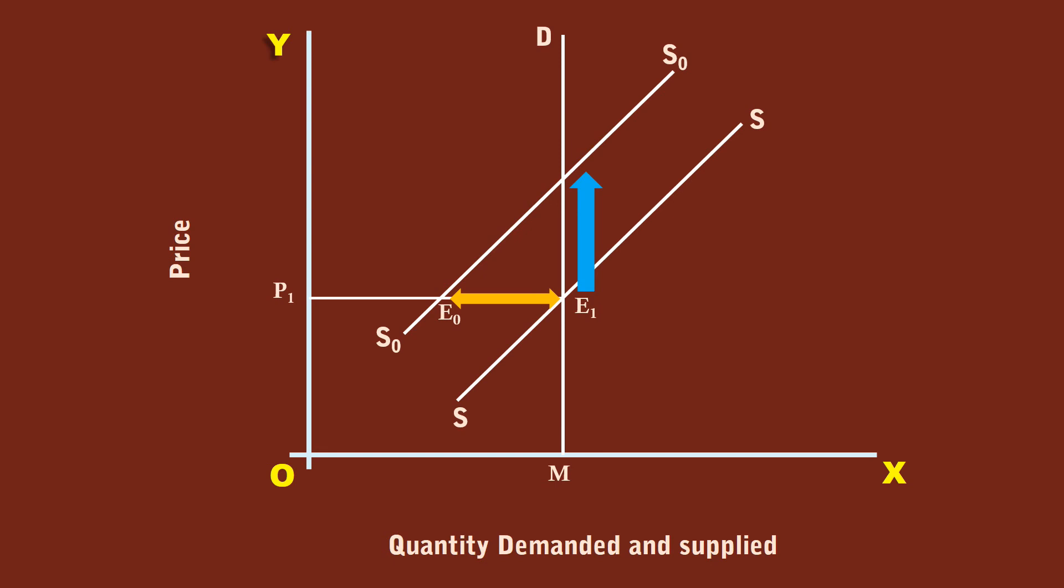As the price goes up, the sellers also go up along the supply curve S0 S0. Finally, a new equilibrium is reached at E2. The new price is P2, which is higher than P1. The net result is increase in price and no change in quantity. The full impact of decrease in supply is taken care of by the price.